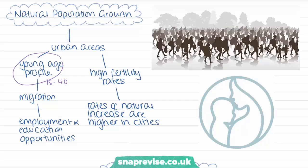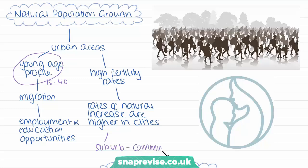Traditionally, professional couples with young children would have lived outside the city in suburbs, where they could raise their children in a quieter area. But currently, with rising costs and increasingly expensive commuting, many more people are encouraged to raise their families within the city, and this is leading to urban growth.